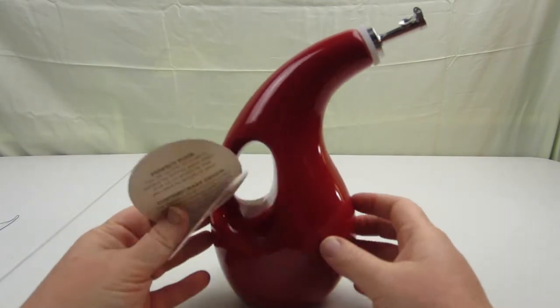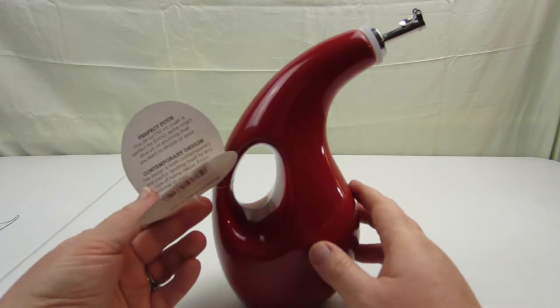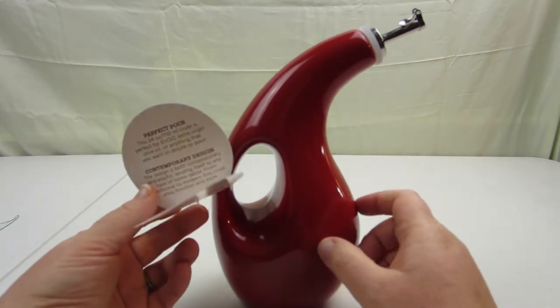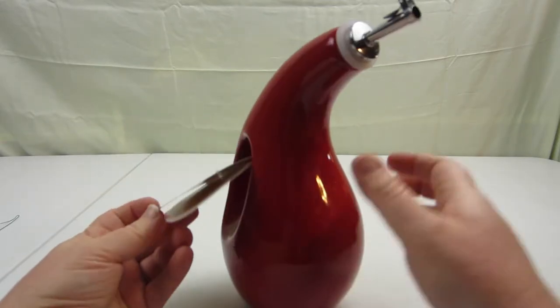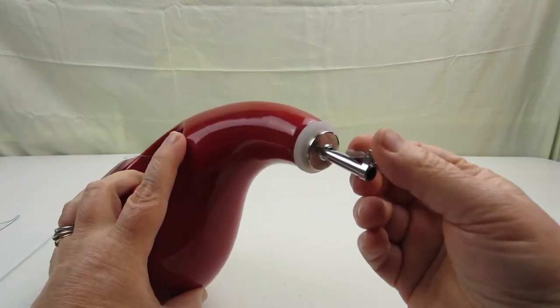So this is actually the official word name for this is a cruet. Now it holds 24 ounces or 710 milliliters. The point of this is that it's supposed to make your pour a little more controlled.